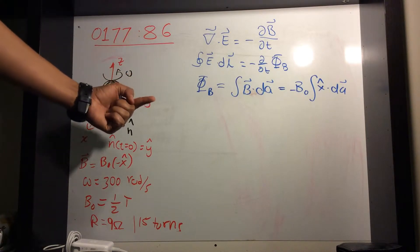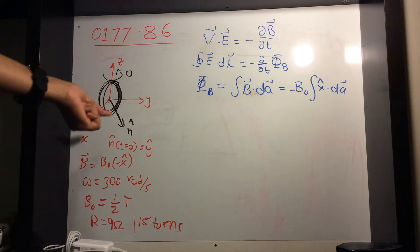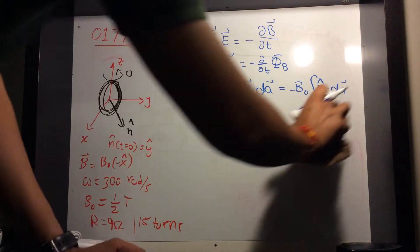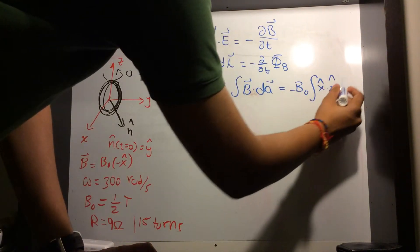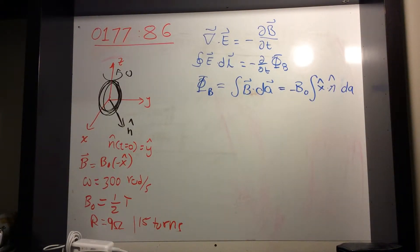So at any moment in time, the direction between y-hat and dA, the normal vector... so I can rewrite this as y-hat dot normal vector dA. Okay, so now what is going to be y-hat dot n-hat?